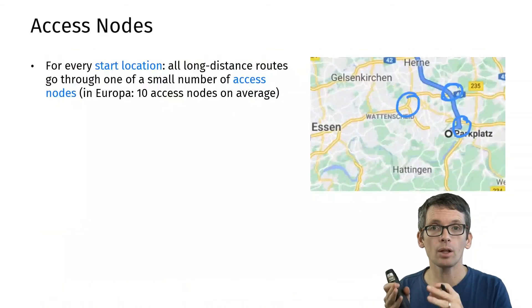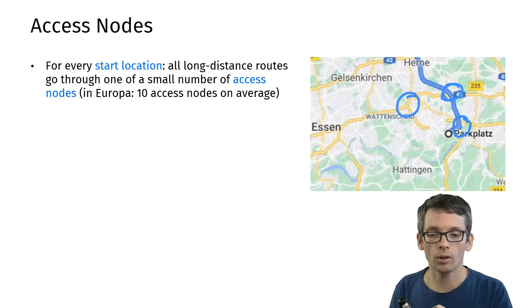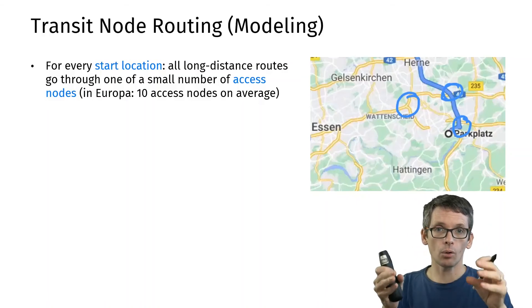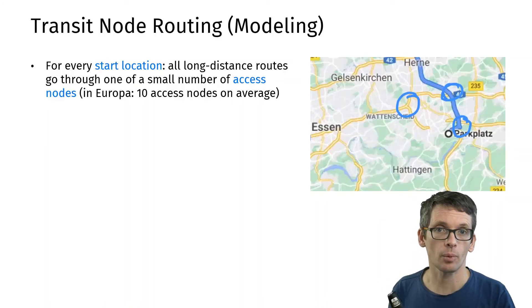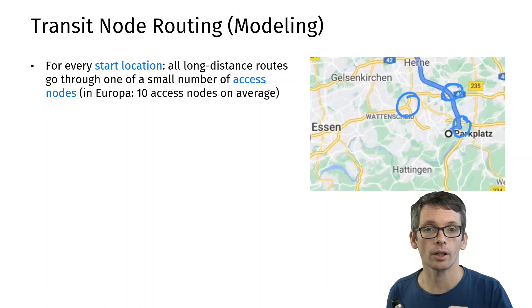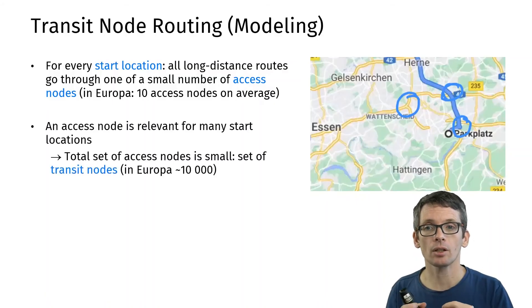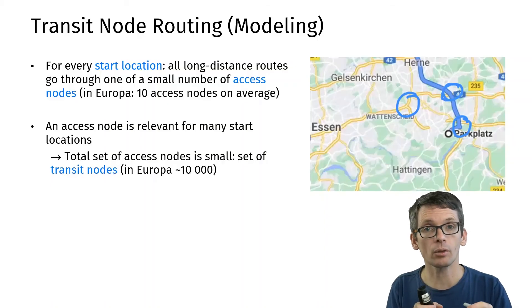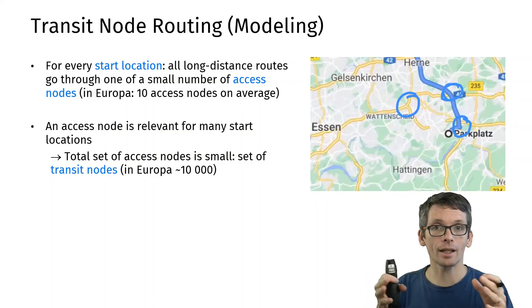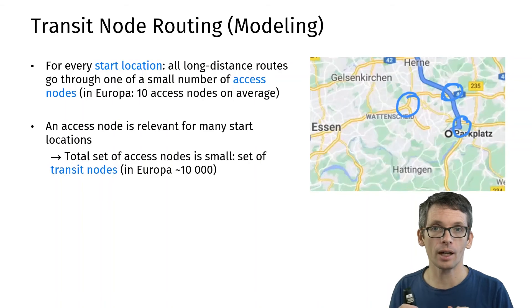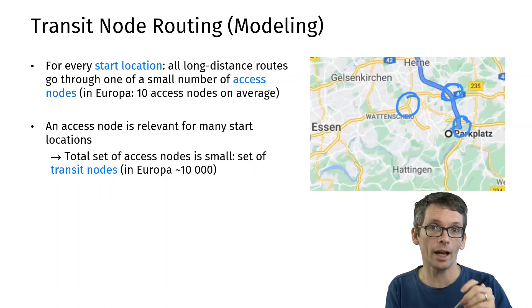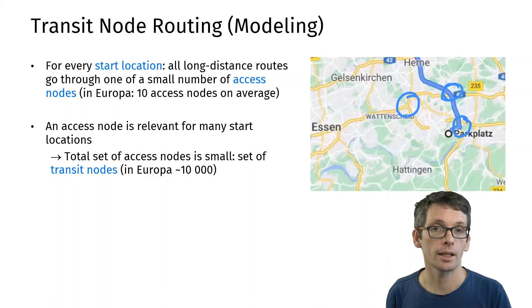For every start location, if I'm doing a long distance route, then it goes through a small number of access points and in Europe that's typically 10 access points per starting location. Also, an access location is relevant for not just that starting location but for many starting locations. Therefore I can look at a set of access points which is relatively small overall. This is called the transit nodes and for Europe 10,000 transit nodes are enough to have access points for all possible starting locations.